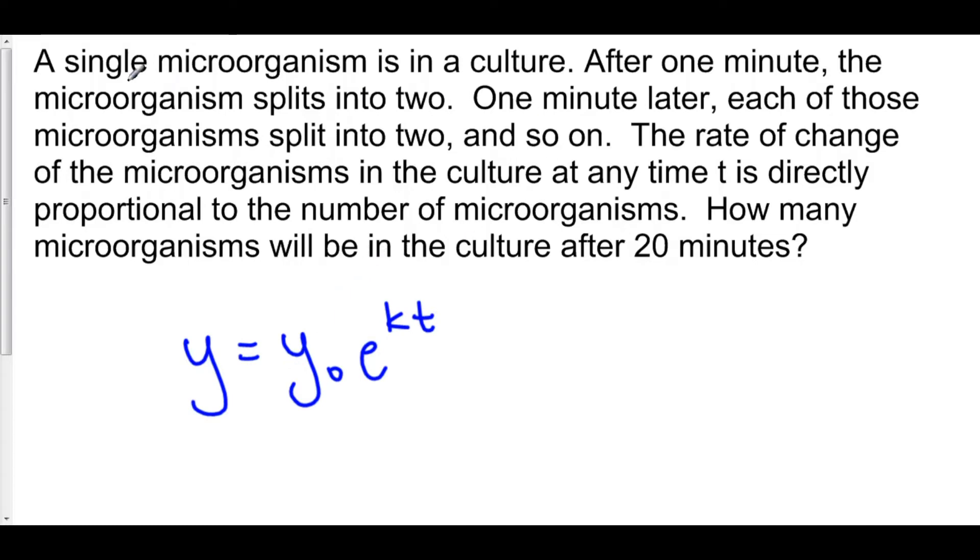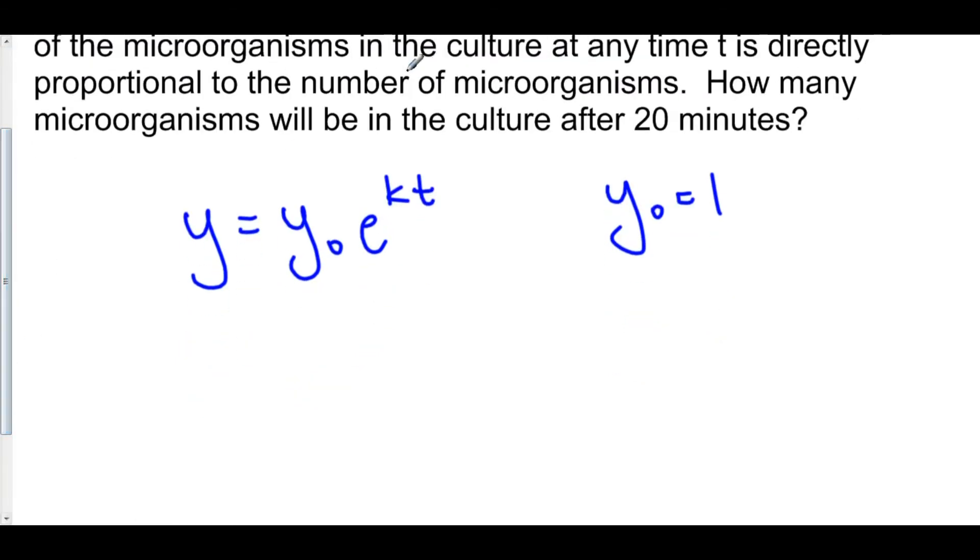Well, first of all, we know what y naught is. Because a single microorganism is initially in the culture, that means that y naught is equal to 1. Alright, let's plug that in. So that means that we have y is equal to e to the kt.